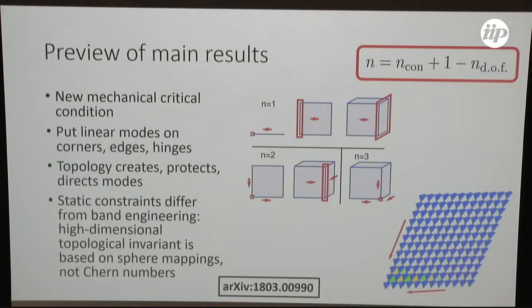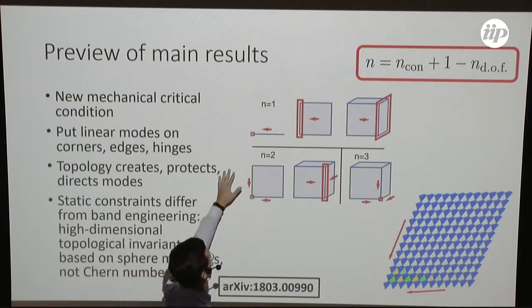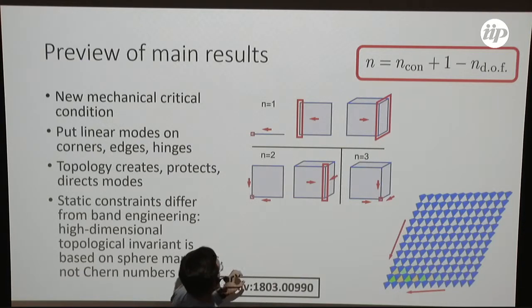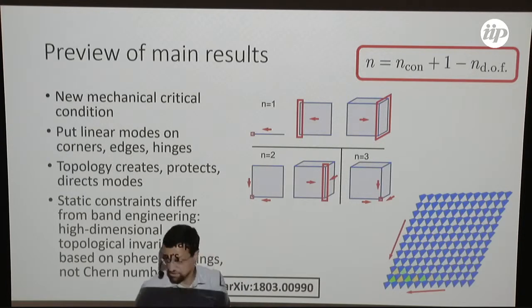I want to preview the main results. If I have a mechanical system such as rigid pieces joined together by hinges, and I want to know what types of modes it can have, there is a mechanical critical condition where I can count the number of constraints and degrees of freedom. It turns out to be very different for periodic structures than for disordered structures, and it can give us new types of modes that live not only at the boundaries of the surface of a bulk material, but also at lower dimensional elements of the surface, like corners or hinges of three-dimensional surfaces.